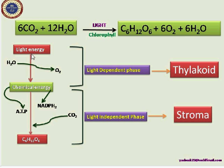Plants have the capacity to sense light energy and convert it into chemical energy. Chemical energy includes ATP — adenosine triphosphate — and NADPH2 — nicotinamide adenine dinucleotide phosphate. In this process, oxygen is released as a byproduct through the photolysis of water. This conversion is designated as the light-dependent phase because light energy is required, and it takes place in the thylakoid.